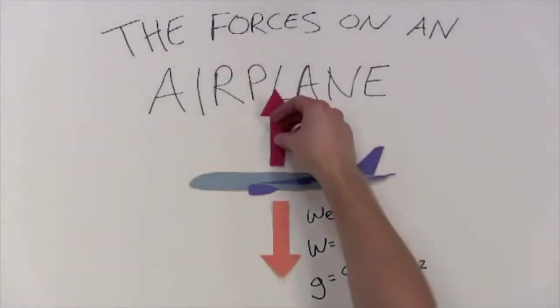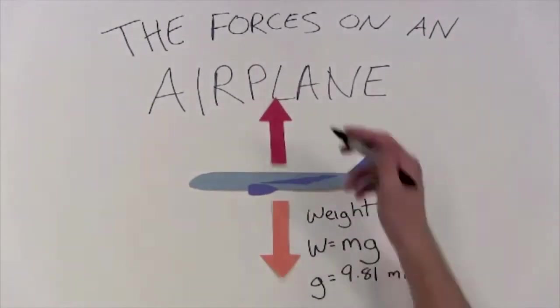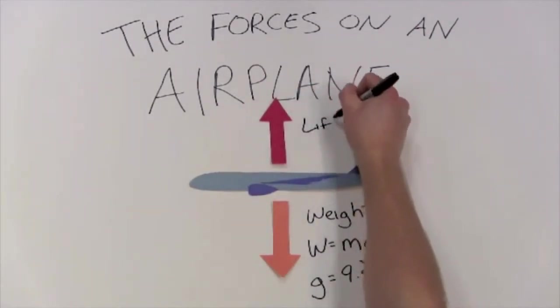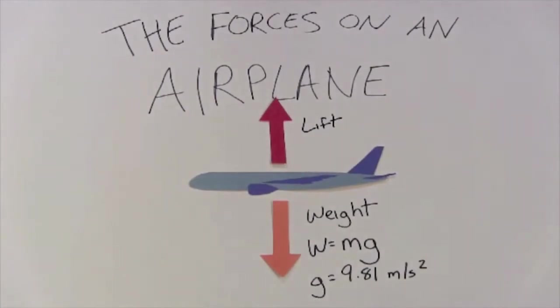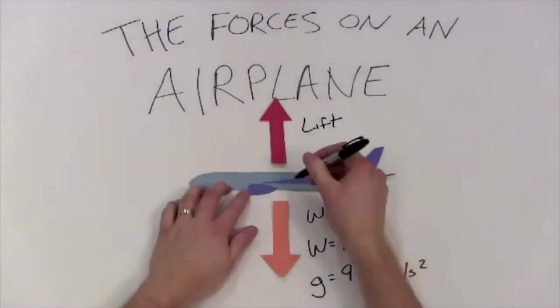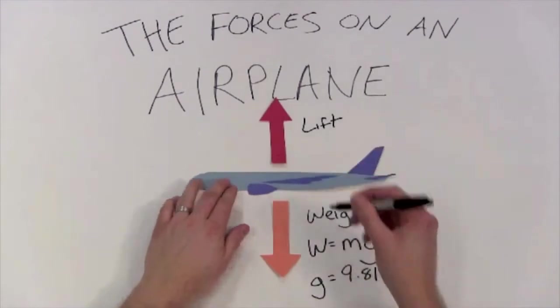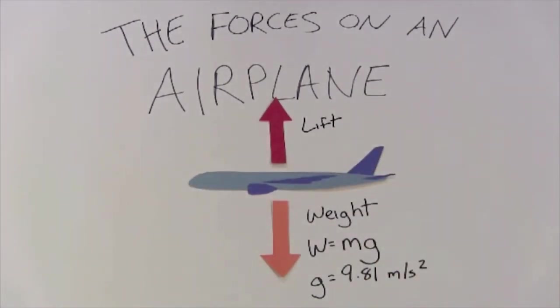Obviously there has to be another force opposing the weight and pushing the airplane up. This force is called lift. Lift operates perpendicular to the airplane's wings, which are right here in this side view.